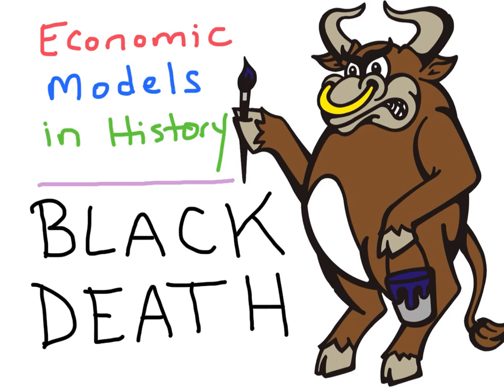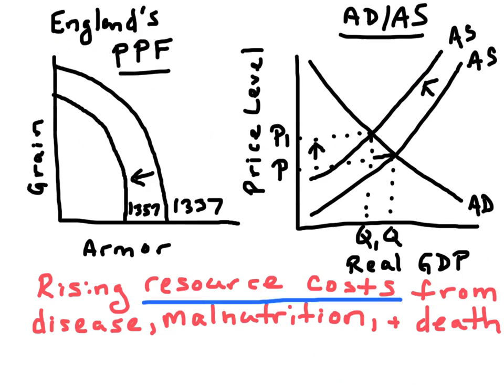Welcome to Noble Review presents Economic Models in History. In this video, we're going to apply some basic economic models to the Black Death. In the late 1340s, Western Europe was annihilated by the Bubonic Plague — we're talking 75 million people dead. That's 30 to 60% of Europe's population for the time.